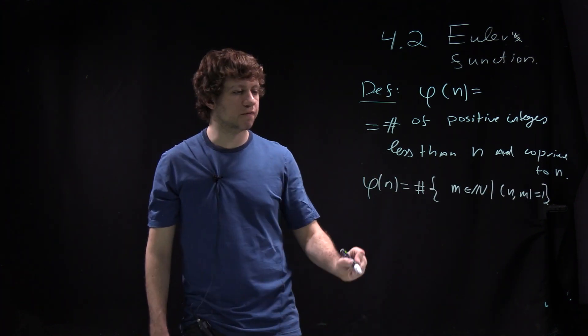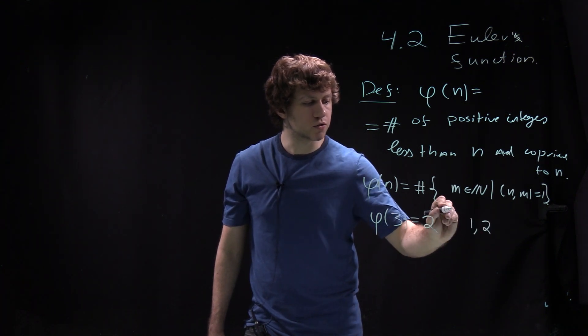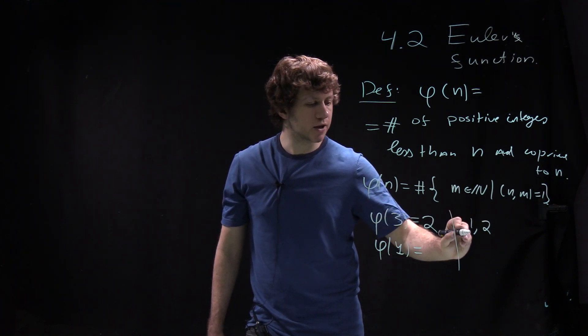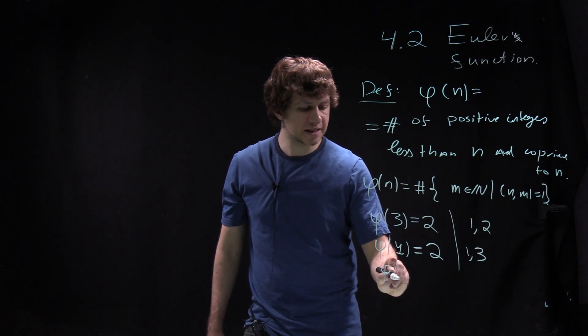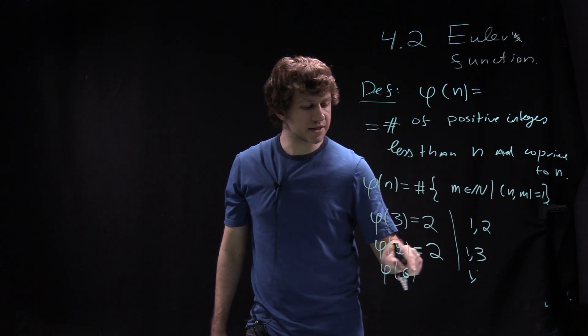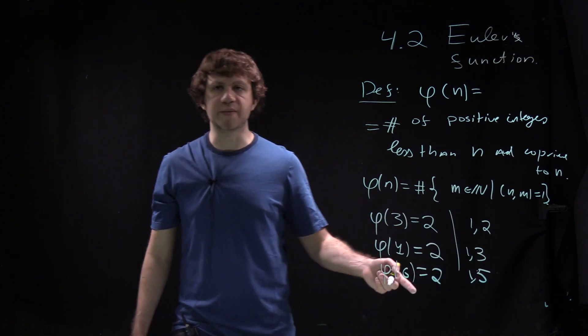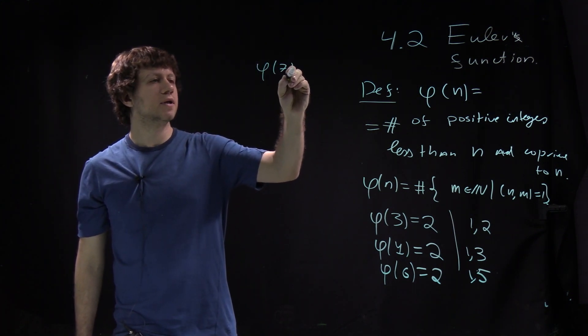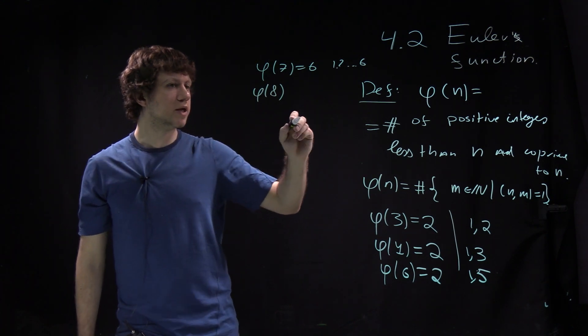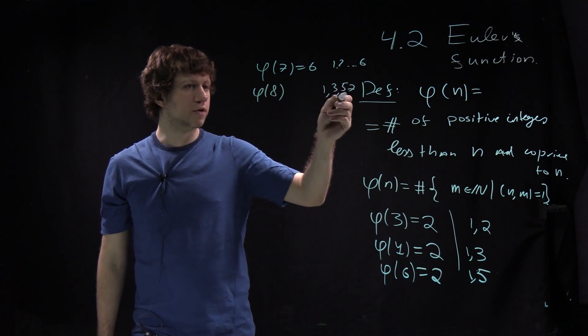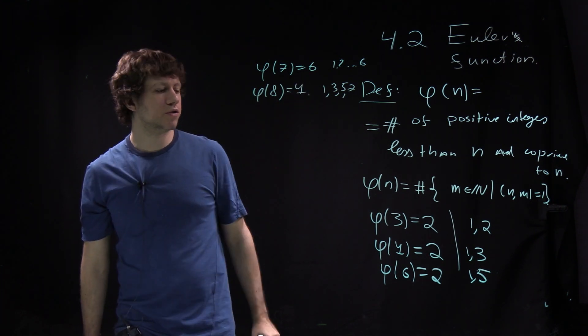We can easily compute some values of phi. If you take phi of 3, that equals 2 because there are two numbers co-prime to 3: 1 and 2. If you take phi of 4, the answer is also 2 with 1 and 3. Phi of 6 equals 2 with 1 and 5. Maybe it's always 2, but no, phi of 7 equals 6 because you have 1, 2, up to 6. Phi of 8 equals 4, with 1, 3, 5, 7 all odd numbers co-prime to it. So you see it's a pretty interesting function.